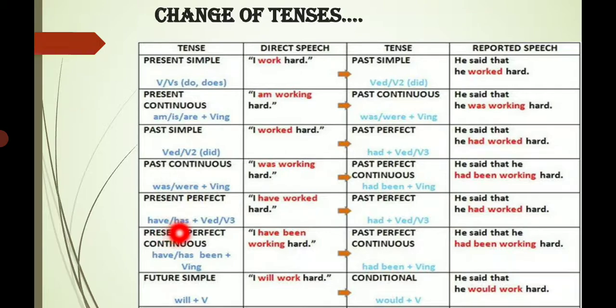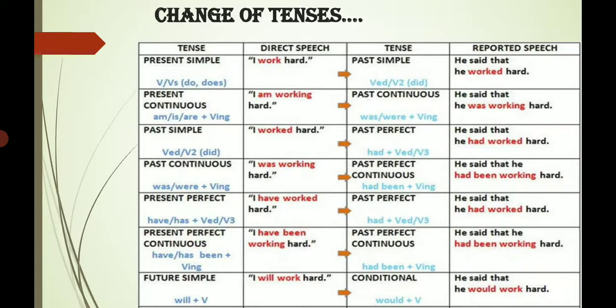Present perfect: if the sentence is in present perfect — when you see 'has', 'have', or the third form of verb, like 'I have worked hard' — you will change it into past perfect, using 'had' and the third form. For example: 'He said that he had worked hard.' And if there is present perfect continuous, you change it into past perfect continuous. But if you see future simple — future indefinite — like 'I will work hard', you change it into a conditional sentence using 'would'. If you see 'will' or 'shall' in a sentence, you will use 'would' to make it conditional. This completes the change of tenses.